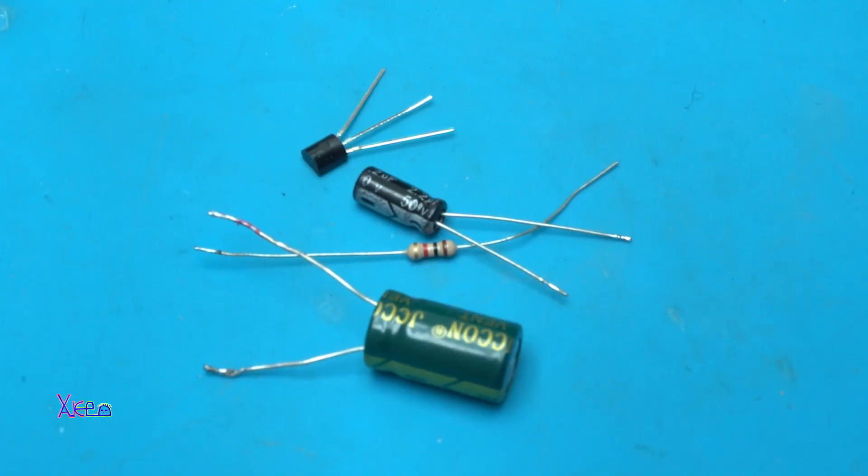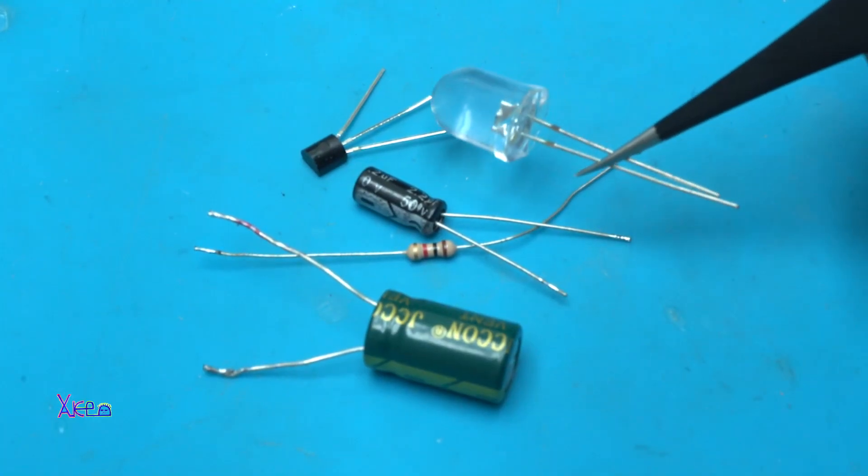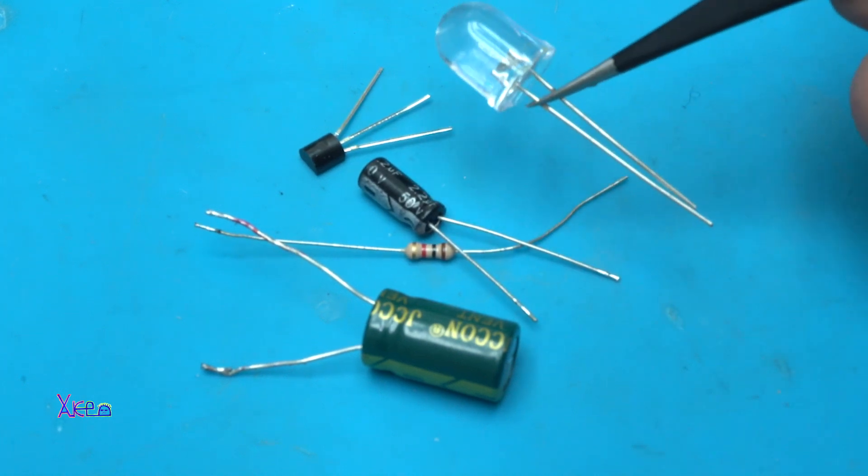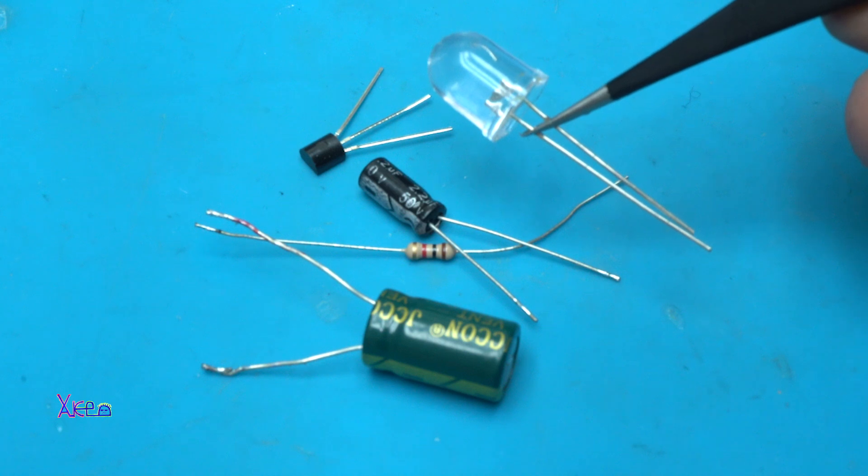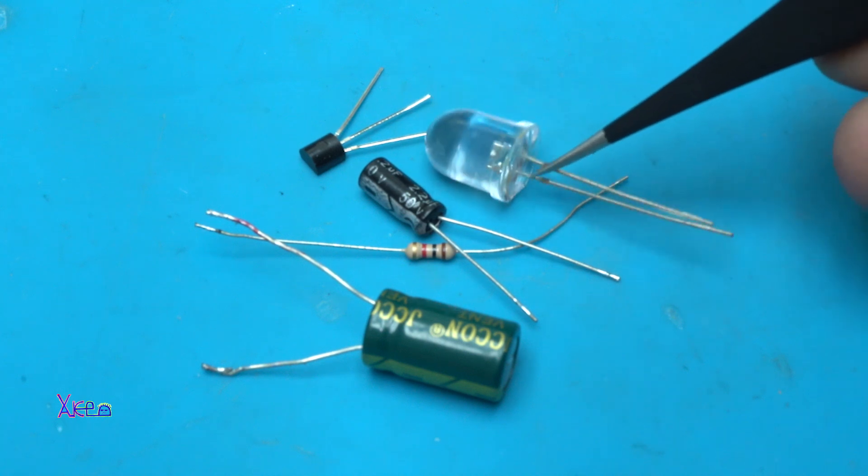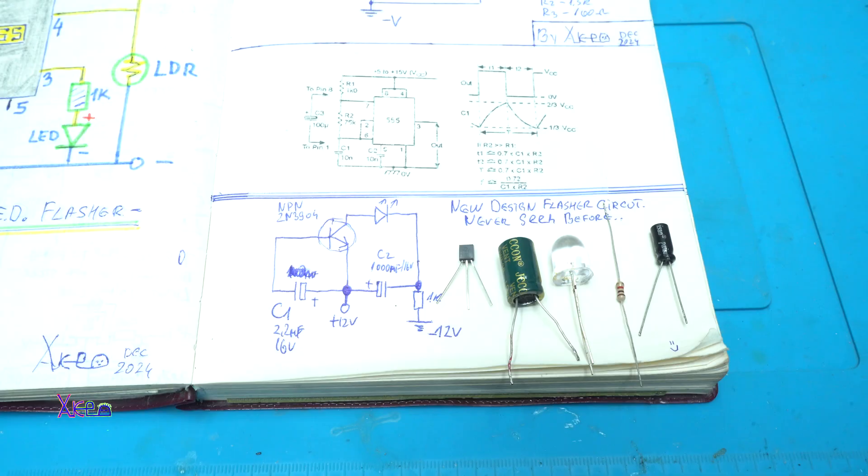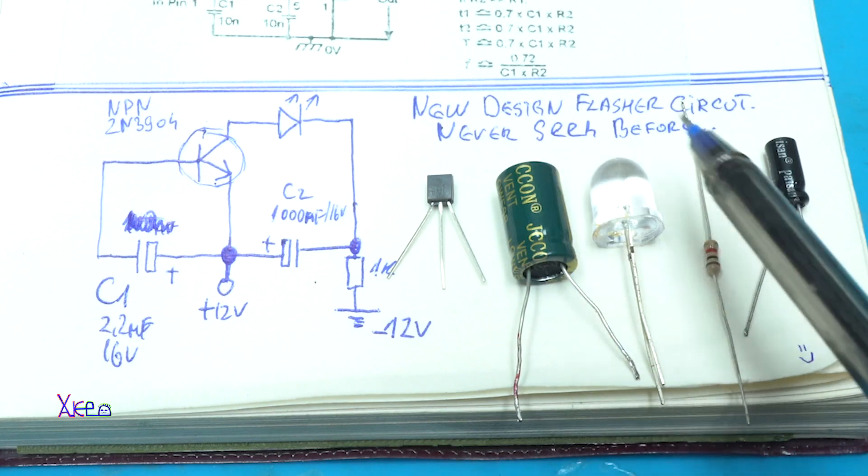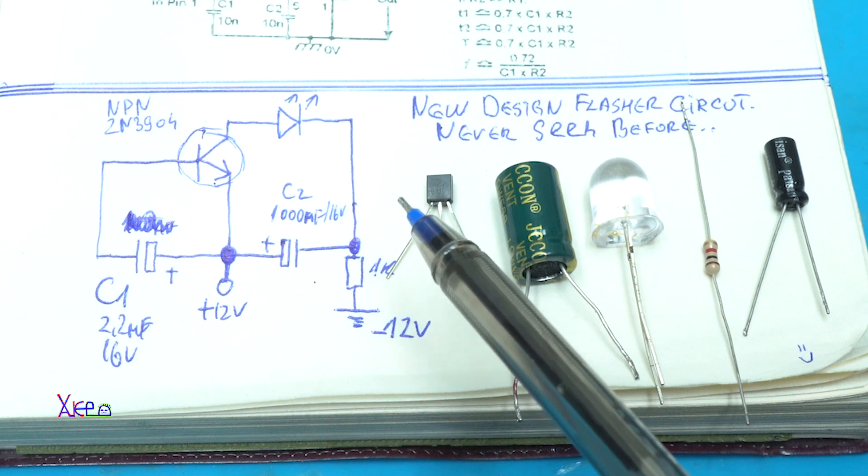Five electronic components to make this new design LED flasher that works on 12 volts and has the effect like on airplanes. Okay, let's start today's video. Yes, it's a new design flasher circuit and it uses only five electronic components.